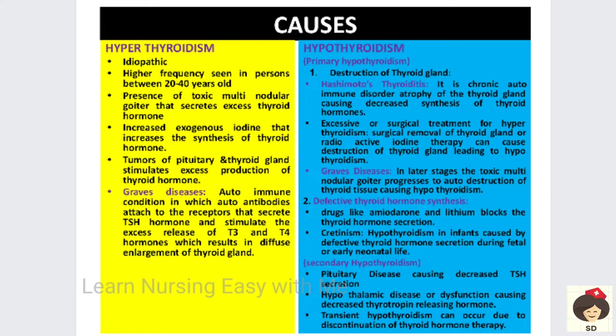Increased exogenous iodine is another cause — when more iodine is taken through salt, seafoods, or fish, there will be increased synthesis of thyroid hormone because iodine helps in production of thyroid hormone. Tumors of the pituitary gland or thyroid gland can also cause hyperthyroidism, as tumor tissue secretes more and more hormones. Pituitary tumors stimulate thyroid hormones, and excess abnormal thyroid tissue also starts producing more hormone.